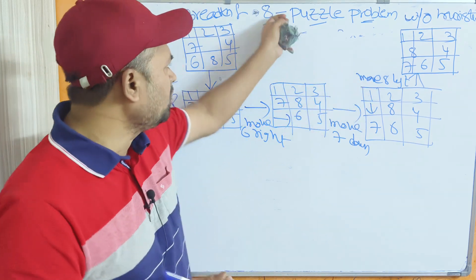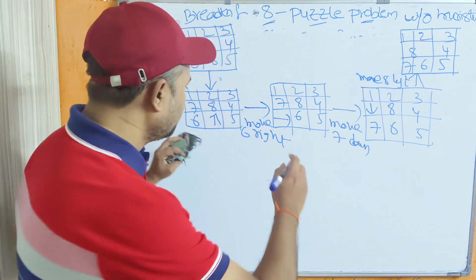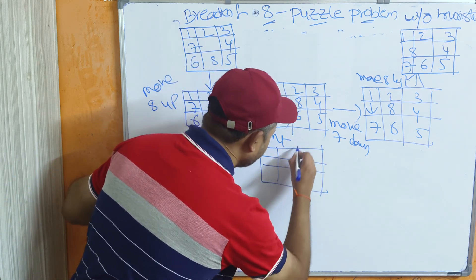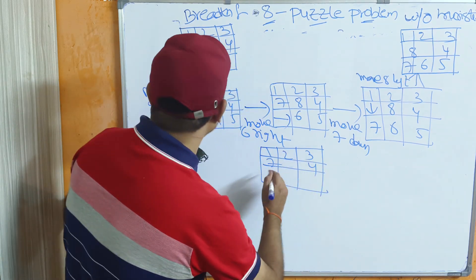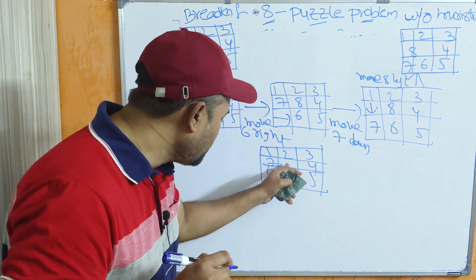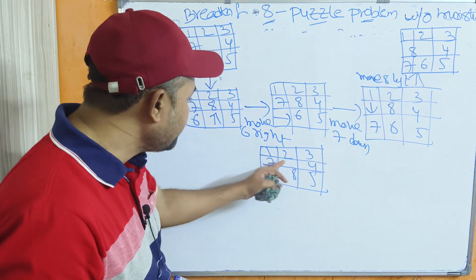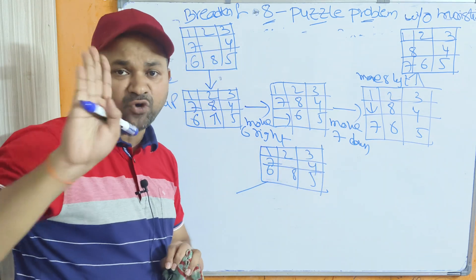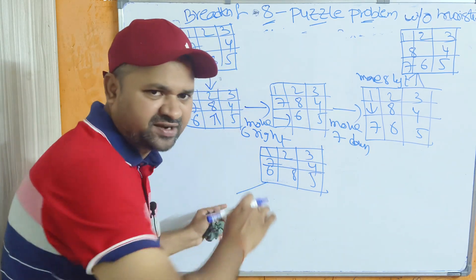Generally, to solve the 8-puzzle problem without a heuristic function, we use breadth-first search. The initial configuration is: 1, 2, 3 / 7, blank, 4 / 6, 8, 5. The possible moves from this state are: move 2 down, move 8 up, move 7 right, or move 4 left — giving us 4 child states. The step cost is 1, so we have 4 moves at this level.